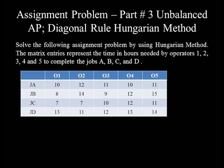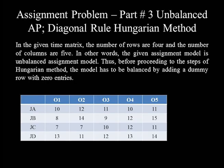The problem will help us see the application of the diagonal rule for solving assignment problems, which can be solved using the row scanning and column scanning techniques. Before going to the steps of the Hungarian method, we have to make sure whether the model is balanced or not. In the given cost matrix, the number of rows is 4 and the number of columns is 5. In other words, the given model is an unbalanced assignment model.